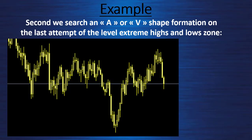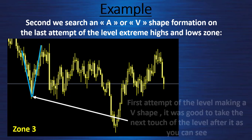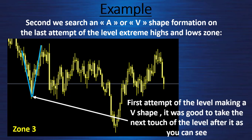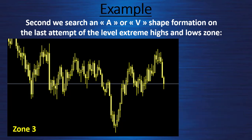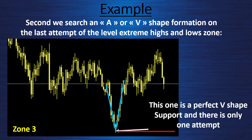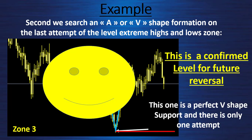Zone 3: our first touch of this specific level was a perfect V shape, so I will take this touch for a rejection — and it was pretty successful. Then we have another very nice V shape formation with a nice pin bar at the bottom, and price hasn't come back there yet. This will be a very good next level for the future touch to play a reversal.